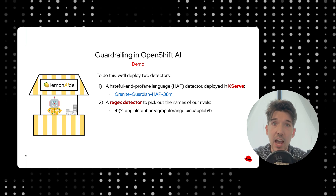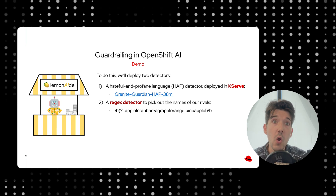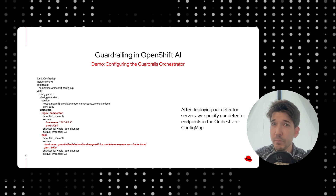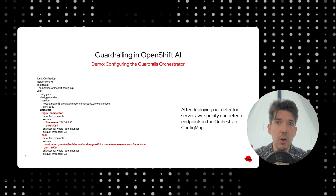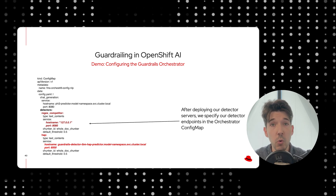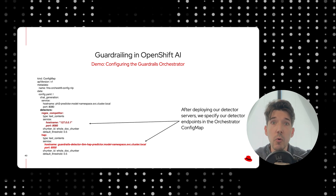If you want to see exactly how these detectors are set up and deployed, I'll leave a link to the full code used in this example at the end of the video so you can run this on your own OpenShift AI clusters. Now that we've got our detectors deployed, we need to configure the orchestrator to know about them — all the different services it needs to talk to and coordinate between. We do this by creating a config map where we pass the locations of the generative model and all of the detector servers, i.e. the hostname and port of where these servers live on the cluster. Once we've created this config map, we can deploy the orchestrator and have a full guardrails deployment up and running.